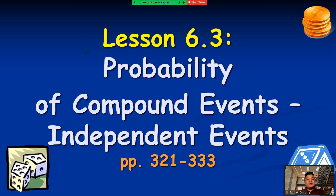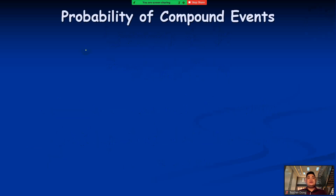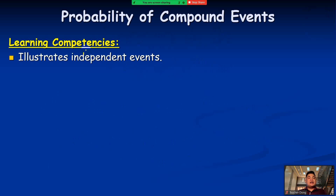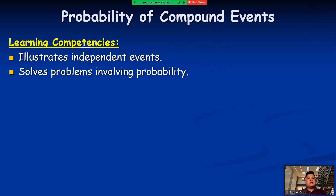In the previous video, we were able to talk about the probability of union of two events. Both are probability of compound events, but we have to differentiate them. For the learning competencies under the most essential learning competencies of the Department of Education, we're going to illustrate independent events and then solve problems involving probability.